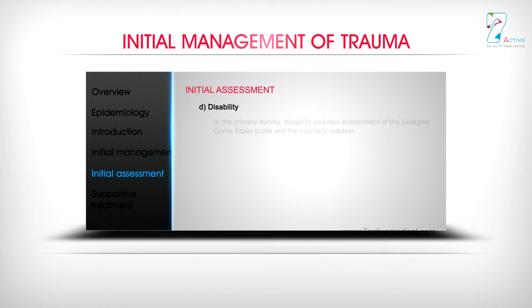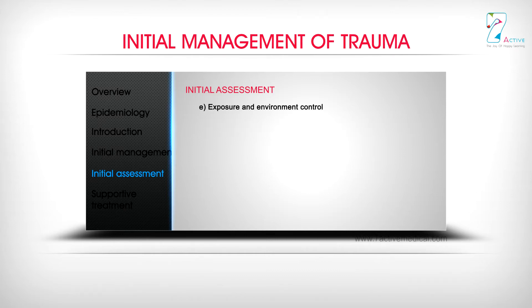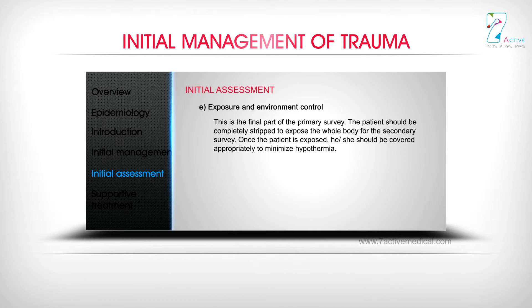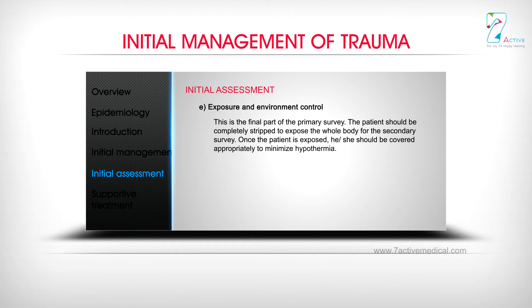Disability: in the primary survey, disability includes assessment of the Glasgow Coma Scale score and the pupillary reaction. Exposure and environment control is the final part of the primary survey. The patient should be completely stripped to expose the whole body for the secondary survey. Once exposed, the patient should be covered appropriately to minimize hypothermia.